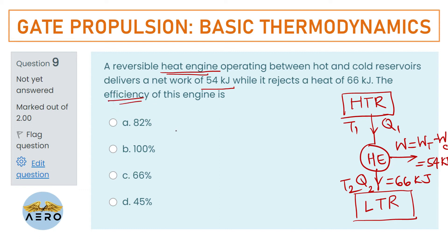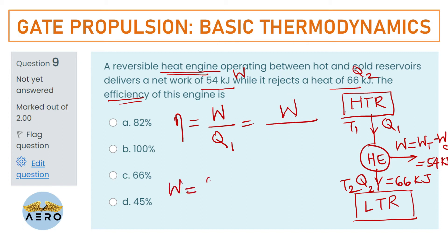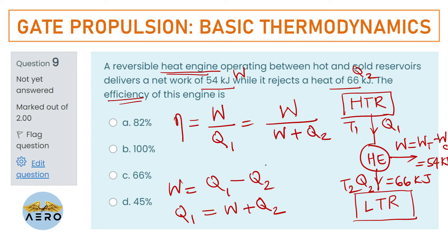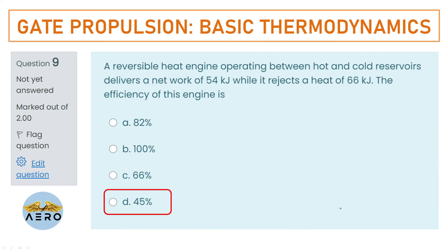We have to find efficiency = W/Q₁. Since W = Q₁ − Q₂, we get Q₁ = W + Q₂ = 54 + 66 = 120 kJ. Therefore efficiency = 54/120 = 0.45, that means 45%. The right option is option D.